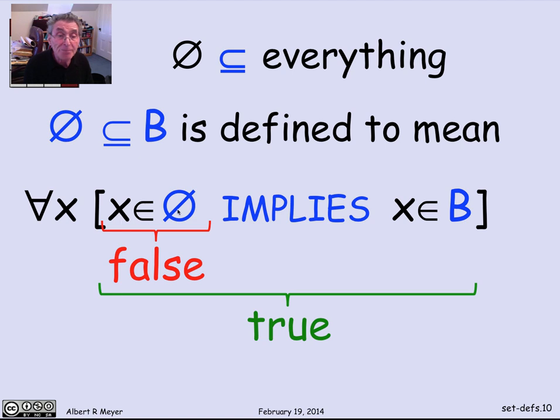I'm not even going to look at B. I can see that x is in empty set is false, so the whole implication is true. And so what I'm saying is that for everything, every x, something that's true has to be true. Well, it is, and that's why the empty set as a subset of B satisfies this definition in a formal way. And this is an example of why that convention that false implies anything is convenient and is made use here.